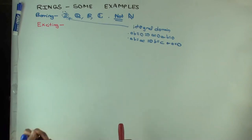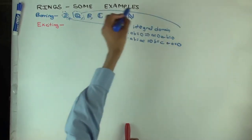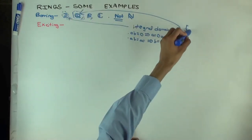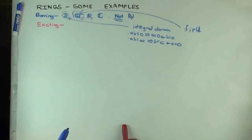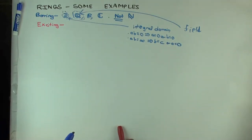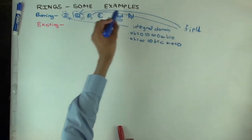The rational numbers actually form a field. A field means that all non-zero elements can be inverted — you can form 1 over the element. In other words, for every non-zero rational number, there's another rational number whose product with it is 1. R and C are also fields.